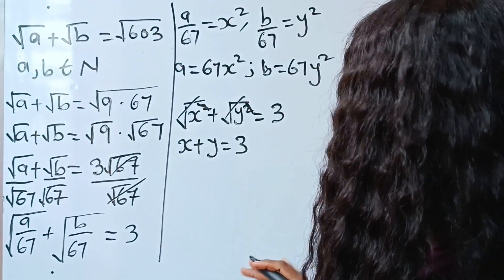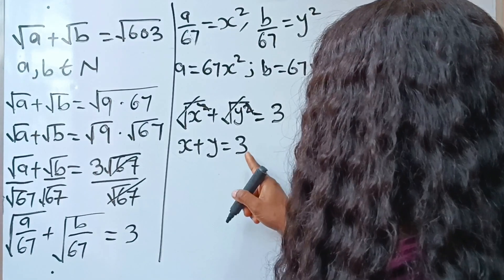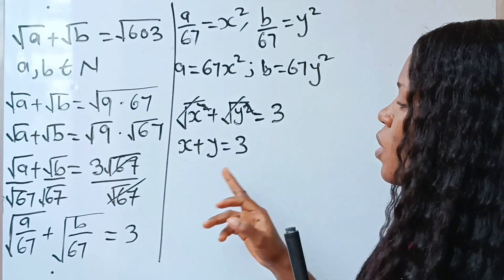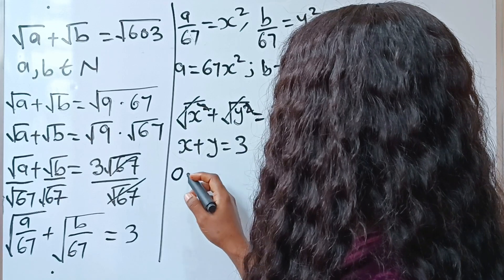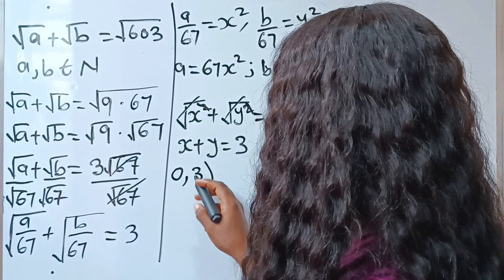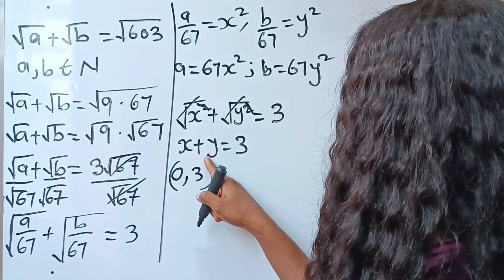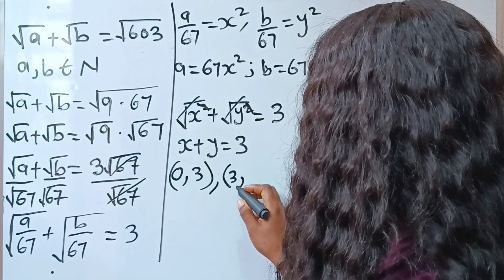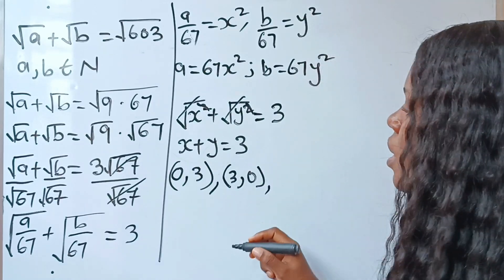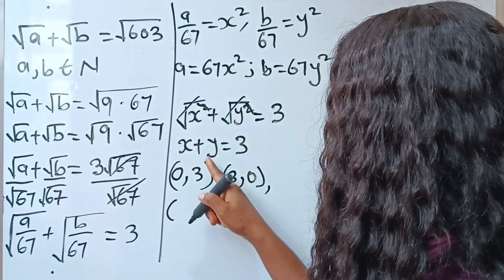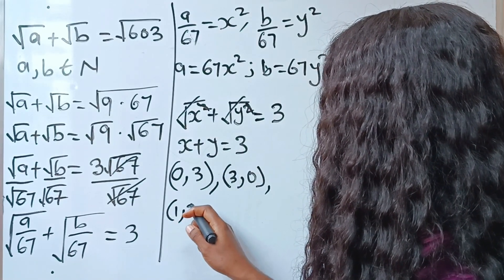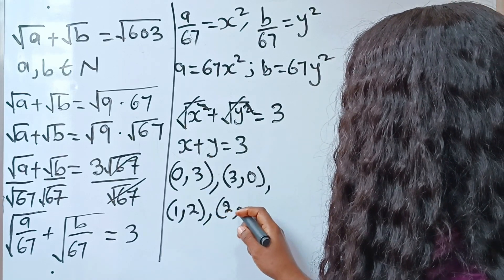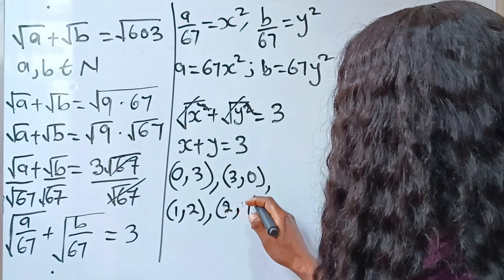Since x and y are positive integers with x + y = 3, there are four cases: Case 1: x=0, y=3. Case 2: x=3, y=0. Case 3: x=1, y=2. Case 4: x=2, y=1.